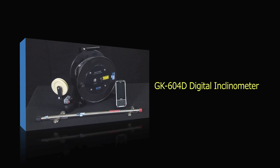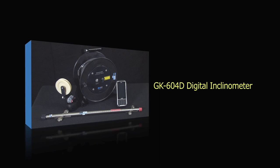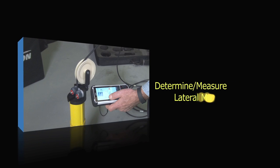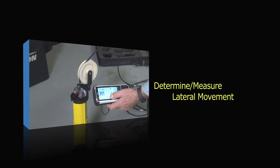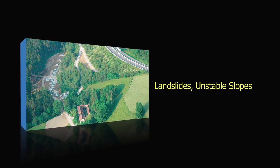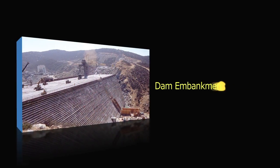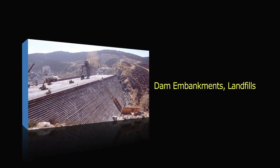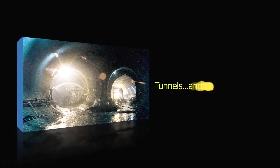The model GK604 digital inclinometer system is used to determine and measure the lateral movements in and around landslides, unstable slopes, dam embankments, landfills, tunnels, and more.